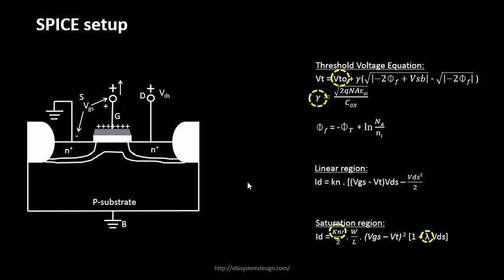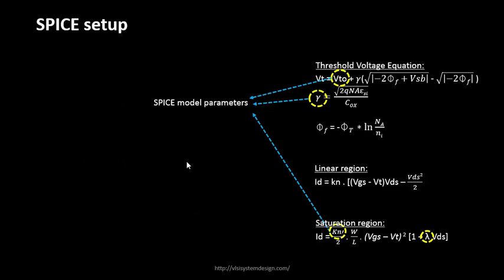The first thing you provide to the SPICE engine is the netlist, which I'll come to shortly. The yellow-highlighted ones are called SPICE model parameters and come as constants. It is critical to provide these model parameters to your SPICE engine in the correct way. They must be correct in order to derive accurate voltage and current waveforms. The first level of checks is to verify that the model parameters are from the correct technology node.